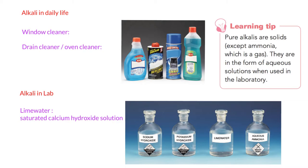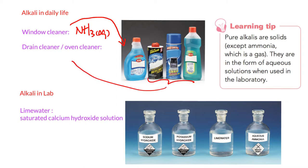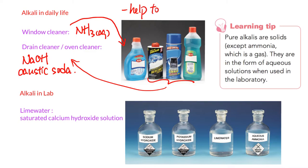Do we have alkaline in our daily life? Yes — we have window cleaner, which uses ammonia solution. We dissolve ammonia gas into water to give ammonia solution. We also have drainage cleaner and oven cleaner — all of these are alkaline, and the one normally used is sodium hydroxide, also called caustic soda. The main purpose of these alkaline solutions is to remove grease, like fingerprints on windows or oil residue on oven surfaces.